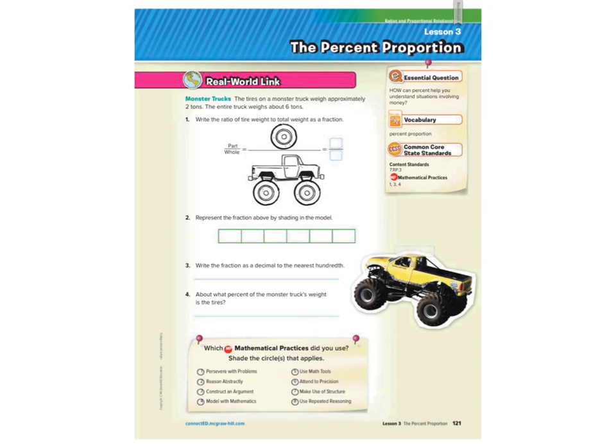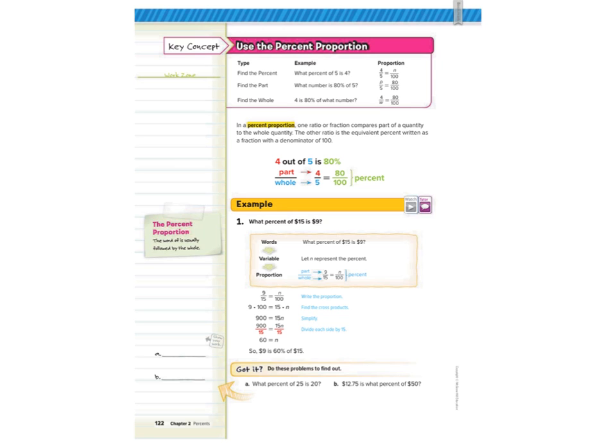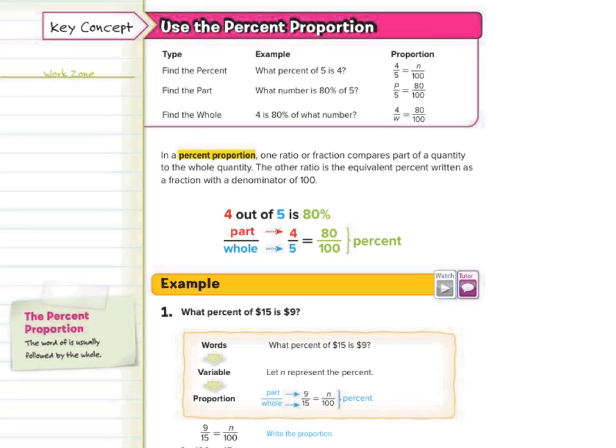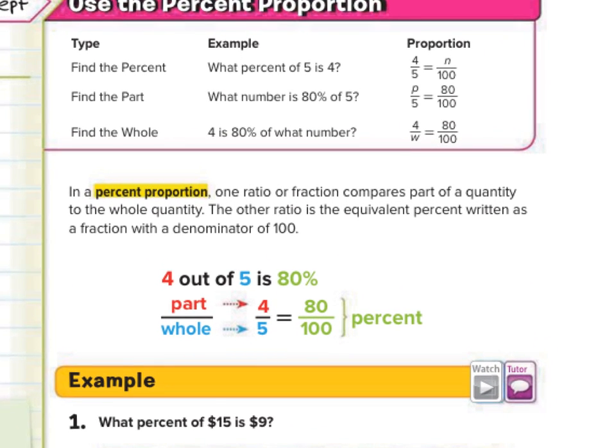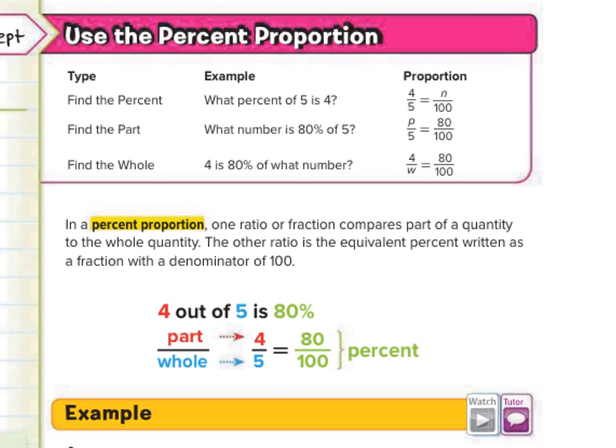Hi, Mr. Richards here. Today's lesson is on the percent proportion. We're going to use the percent proportion today to either find the percent — what percent of 5 is 4 — the part — what number is 80% of 5 — or the whole — 4 is 80% of what number.